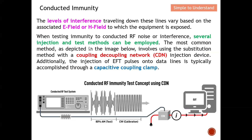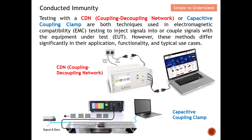When testing immunity to conducted RF noise or interference, we have several injection and test methods that can be employed. The most common method is using the CDN — coupling decoupling network. Another method is through the clamp, which injects EFT pulses onto the data line through capacitive coupling. Testing with a CDN or capacitive coupling clamp are both techniques used in EMC testing to inject signals into or couple signals with the EUT, but they differ significantly in application, functionality, and typical use cases.